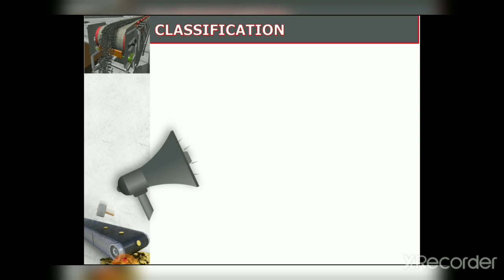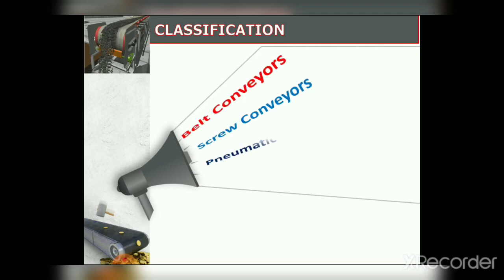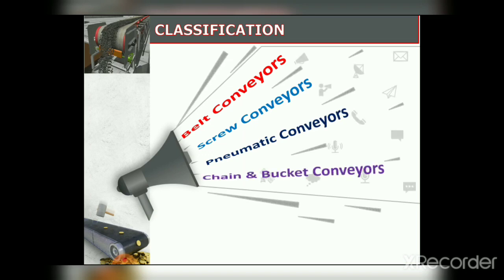Here is the classification of conveyors. Conveyors are classified into five major groups: belt conveyor, screw conveyor, pneumatic conveyor, chain conveyor, and bucket conveyor. We will discuss this classification briefly here, as individual lectures are planned for each subtype.